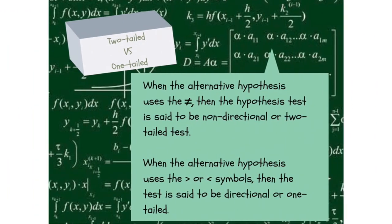In identifying the alternative hypothesis, you can either identify it as two-tailed or one-tailed. When the alternative hypothesis uses the unequal sign, then the hypothesis test is said to be non-directional or two-tailed test. But when the alternative hypothesis uses the greater than or less than symbols, then the test is said to be directional or one-tailed test.